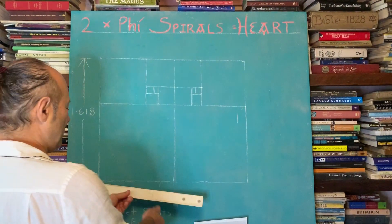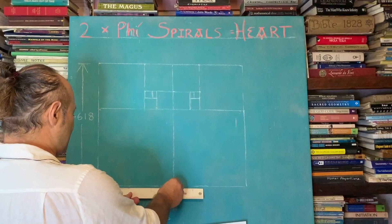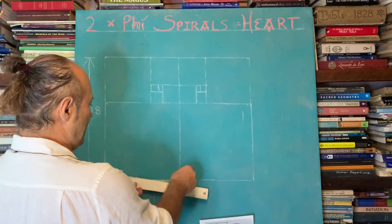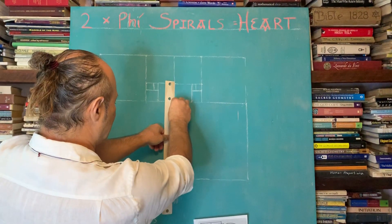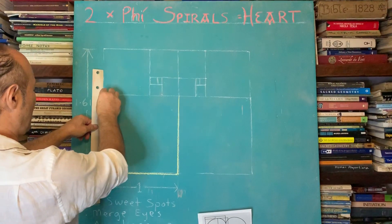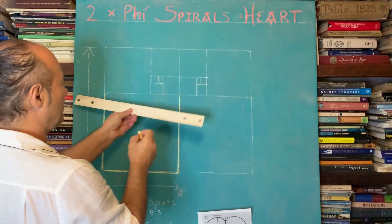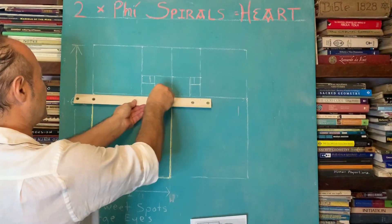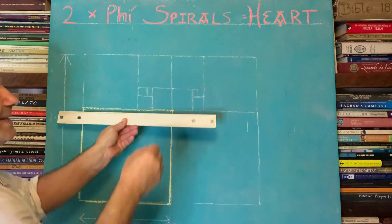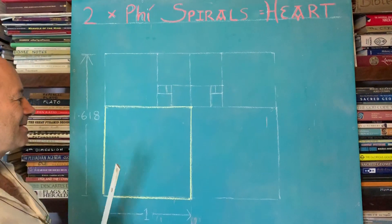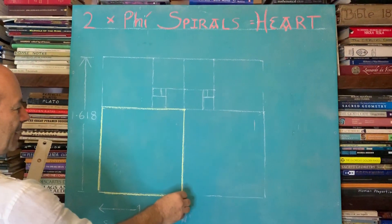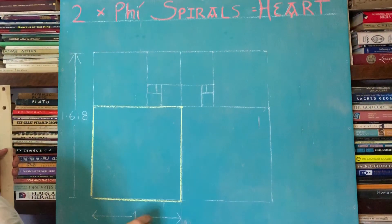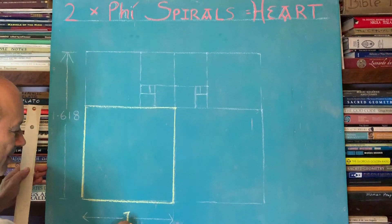First of all, we're going to draw a unit square. We'll call this square one by one. We always like to start off with unity because unity is always about the source, it's about consciousness. So here we have the first square, one unit.